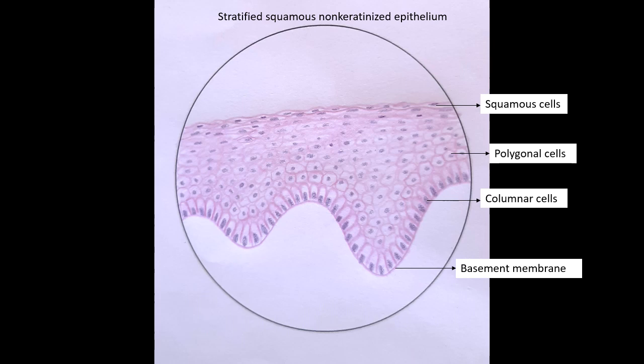Starting from the basement membrane, over which there is a basal layer of columnar cells, then there is an intermediate layer of polygonal cells, and at the top there are layers of squamous cells. So let's see how to draw this diagram. Welcome to the session.